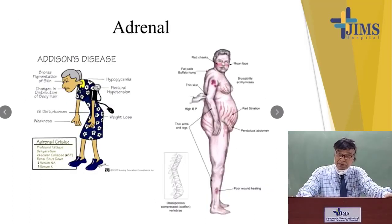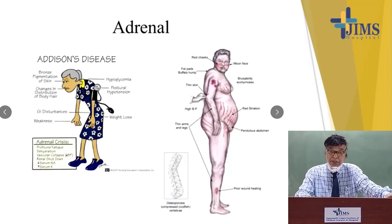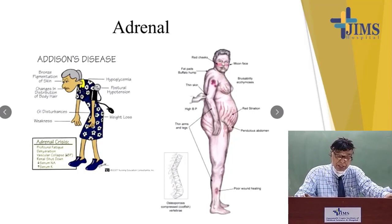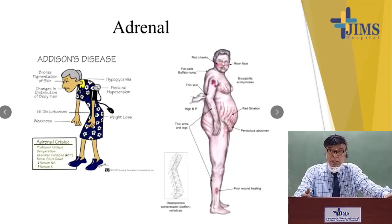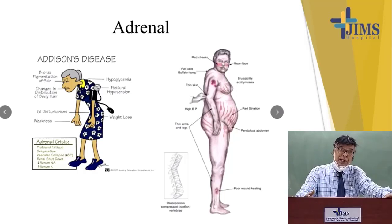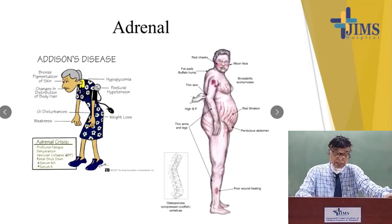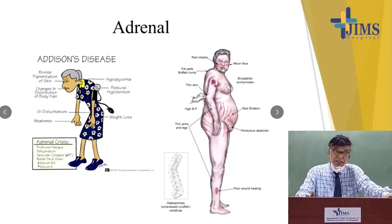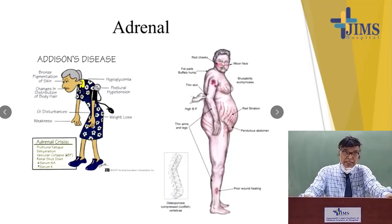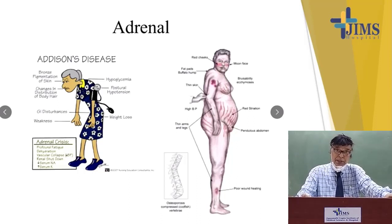Regarding adrenal function: hypofunction of the adrenal is Addison's disease, characterised by brown pigmentation of the skin. We must differentiate primary Addison's disease from secondary — that is, panhypopituitarism or Sheehan syndrome. If pigmentation of the skin is present, it is most likely primary adrenal deficiency. If there is no pigmentation and the skin appears very soft and silky, then the patient is likely suffering from secondary or pituitary-related hypothyroidism, or panhypopituitarism.